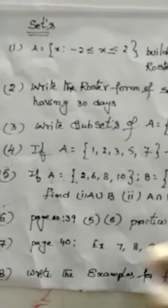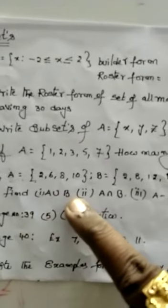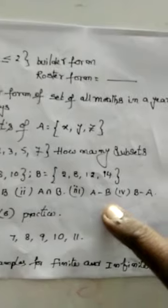Next, if A and B are given, find A union B, A intersection B, A minus B, B minus A. Next question, you have to take the textbook.